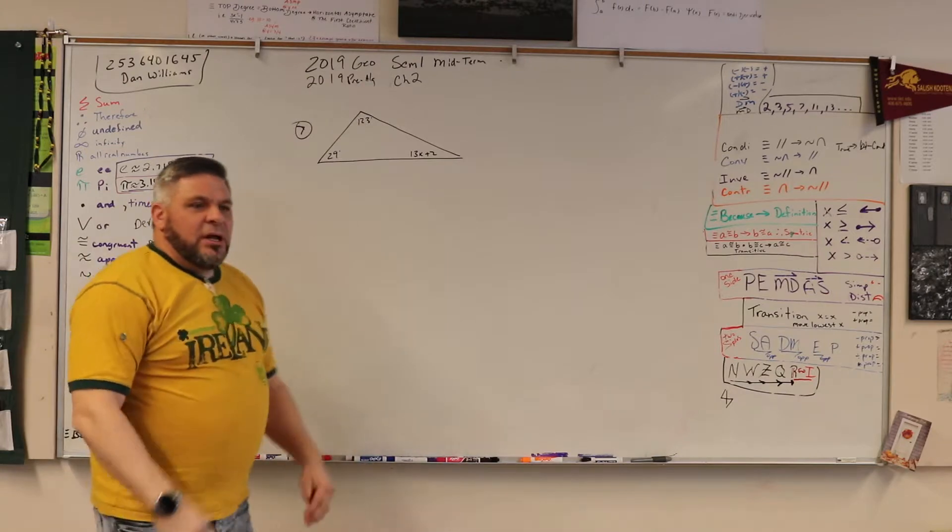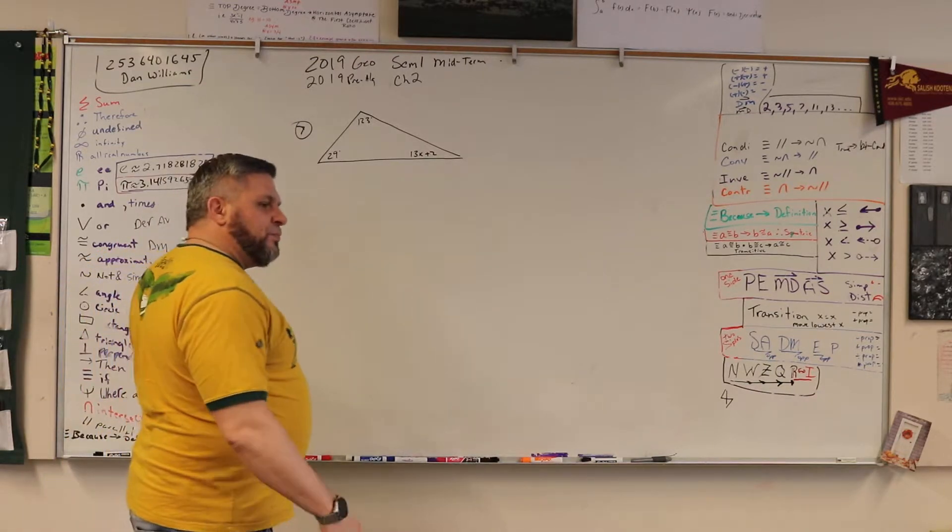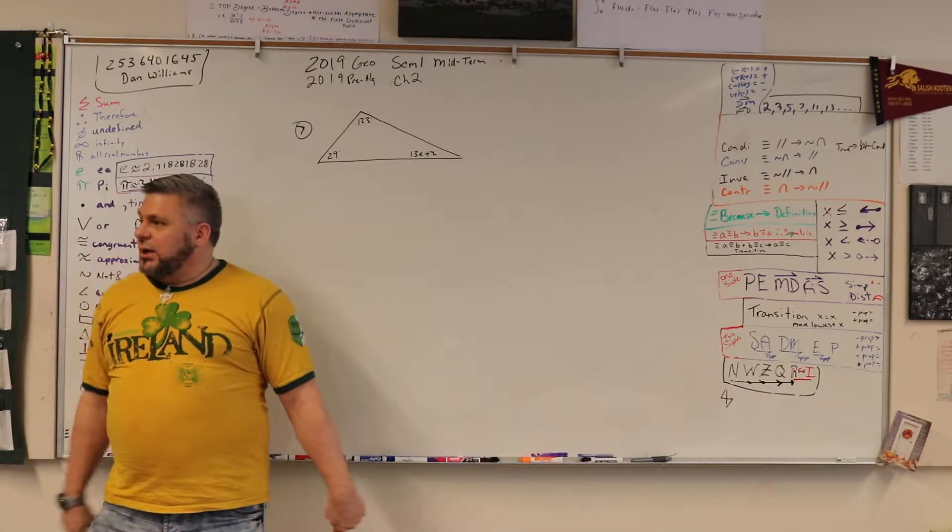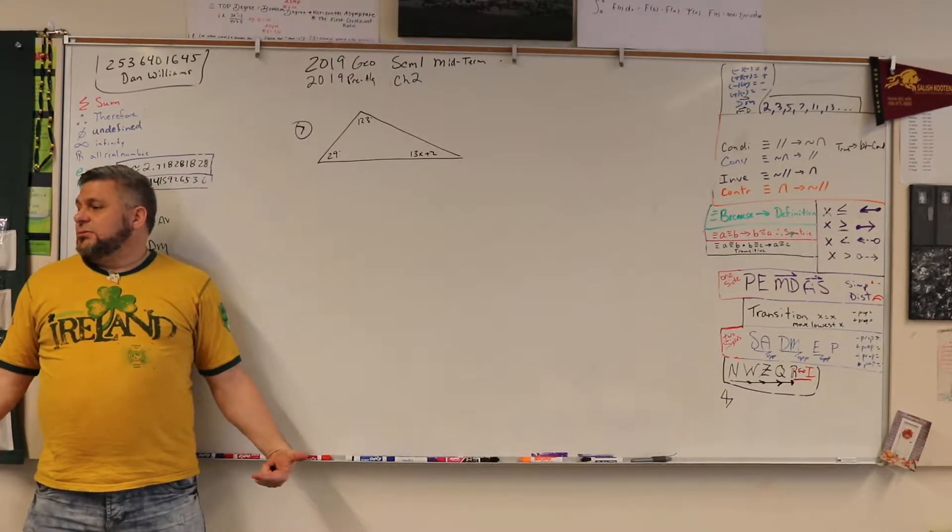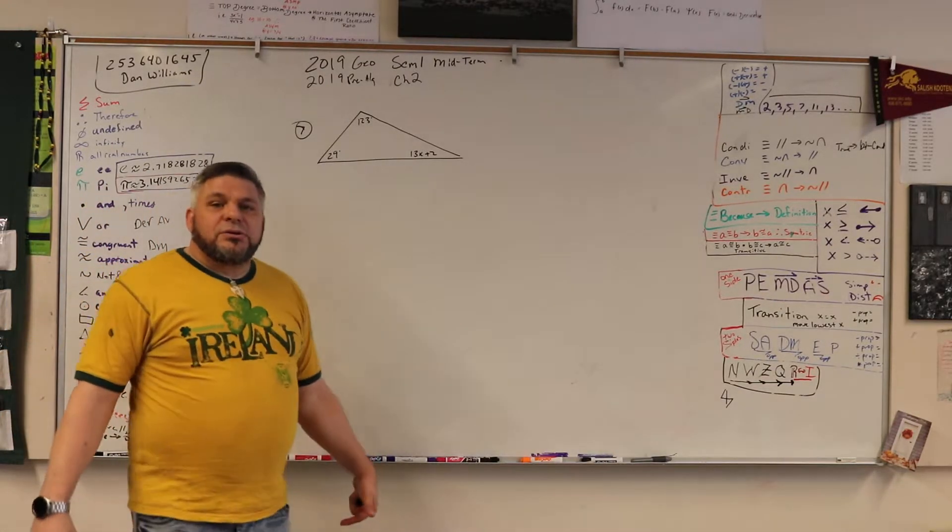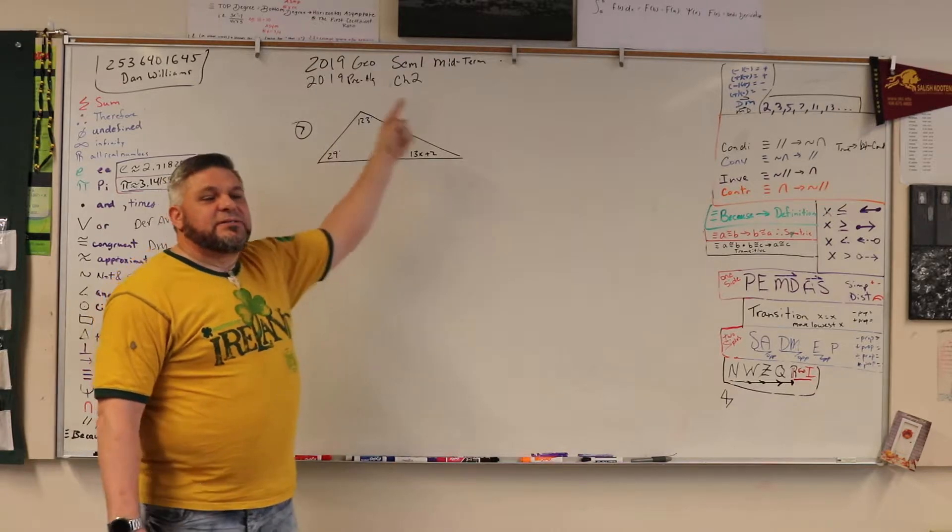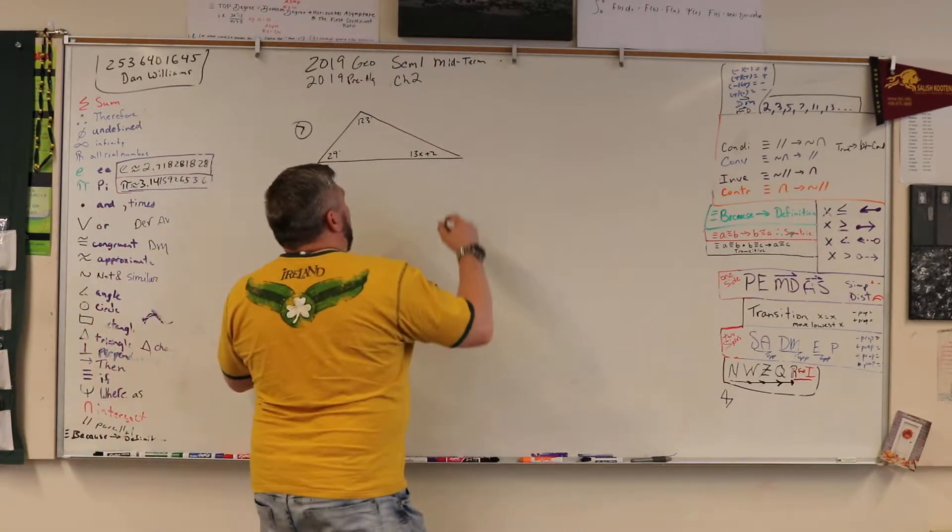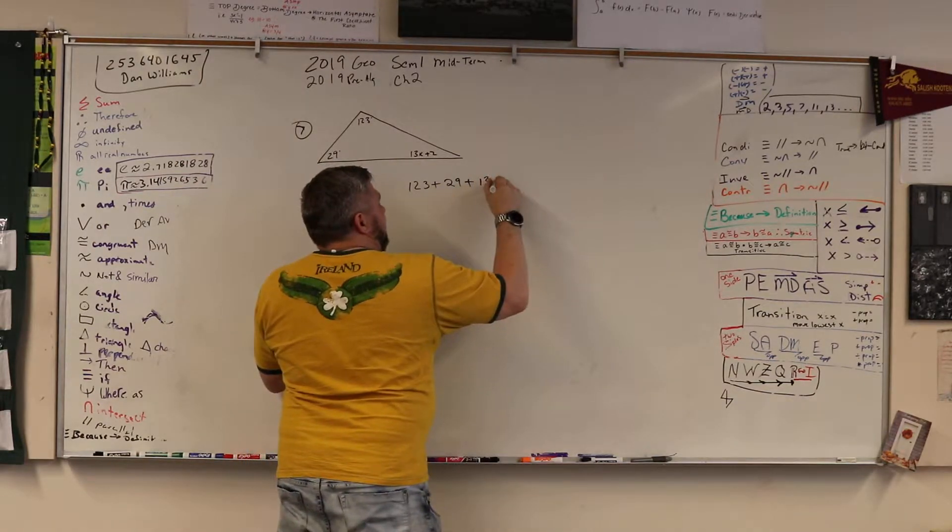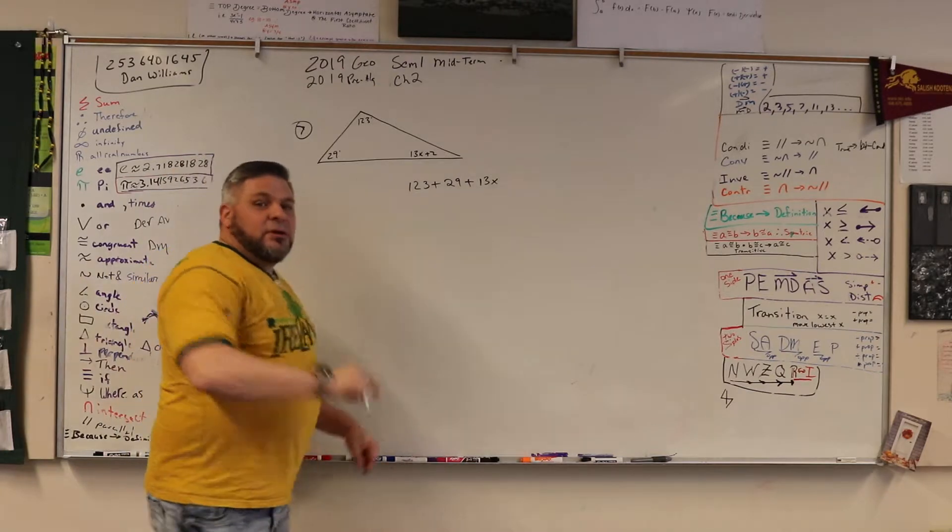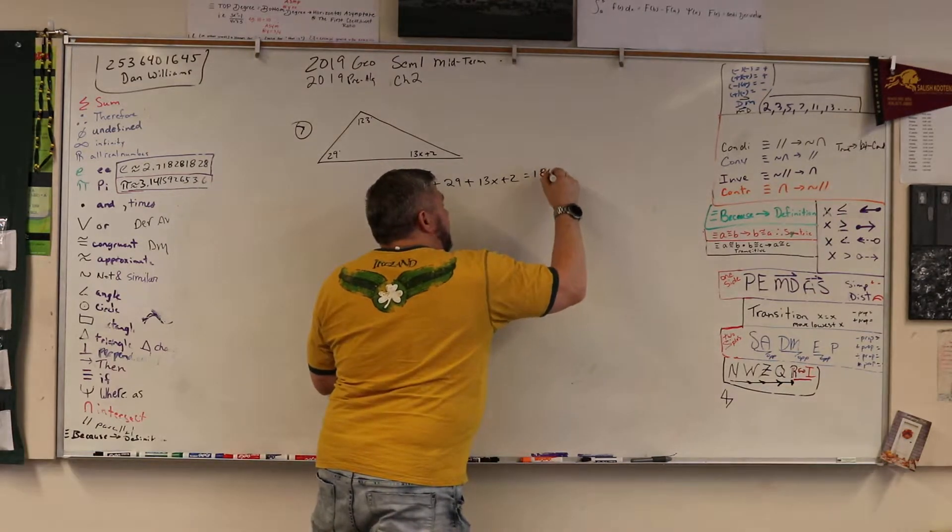How am I going to set this up then? If they all add up to be 180 degrees, how would I set this up? Sage, not sure? That's good. Leela, if they all add up to be 180, how would I set this up? It's okay if you don't know. Charles? 123 plus 29 plus 13x plus 2. Not times, that's an x. Good. Equals how much? 180. Does that make sense?